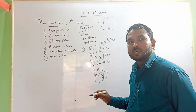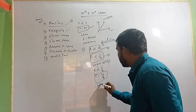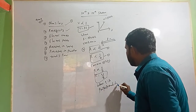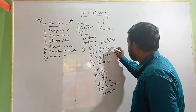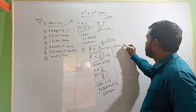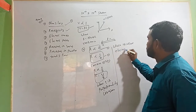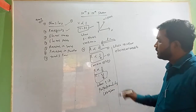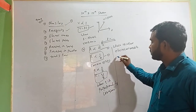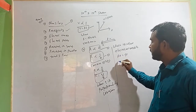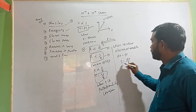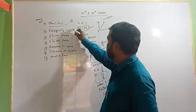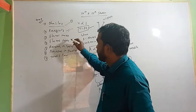Here, ρ (rho) is the proportionality constant, which is called electrical resistivity. You can find the resistivity by cross-multiplying: R·A = ρ·L, therefore ρ = RA/L. That is the formula for resistivity.